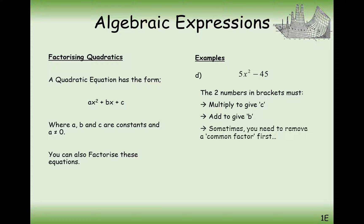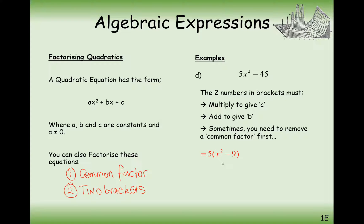This time we've got something where we can remove a common factor out of the expression first before going ahead and trying a two-bracket factorisation. When you're factorising, always look first for a common factor — that's step one. Then if you can't find any common factors, try two brackets. In this case, we go through both steps. We pull out a factor of 5, because 5 is in common between both terms. And then we go through the difference of two squares: x plus 3 and x minus 3.